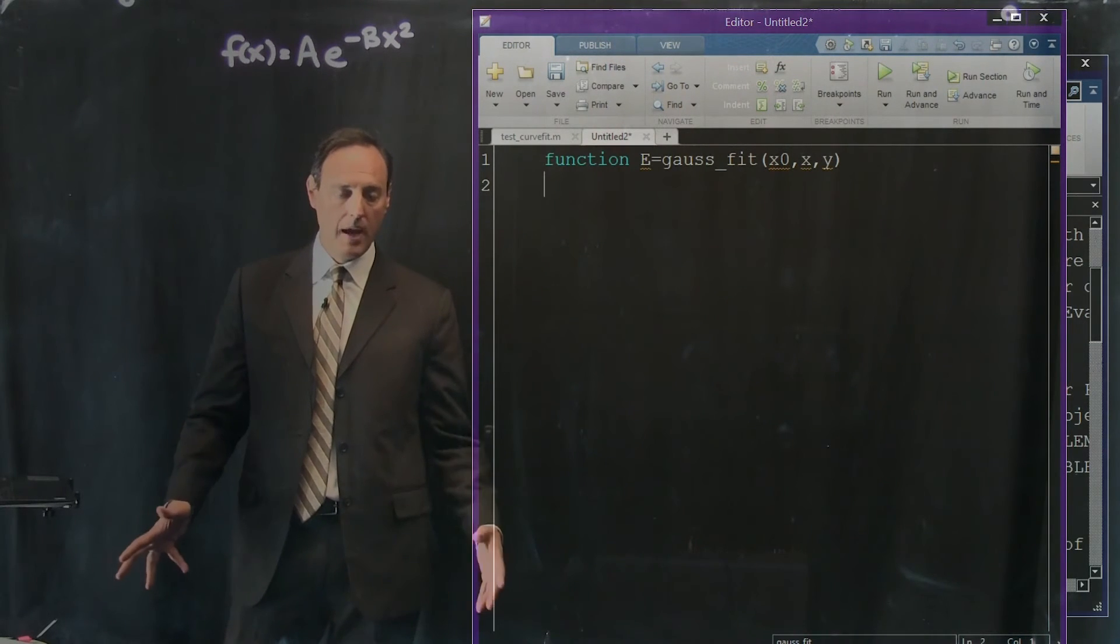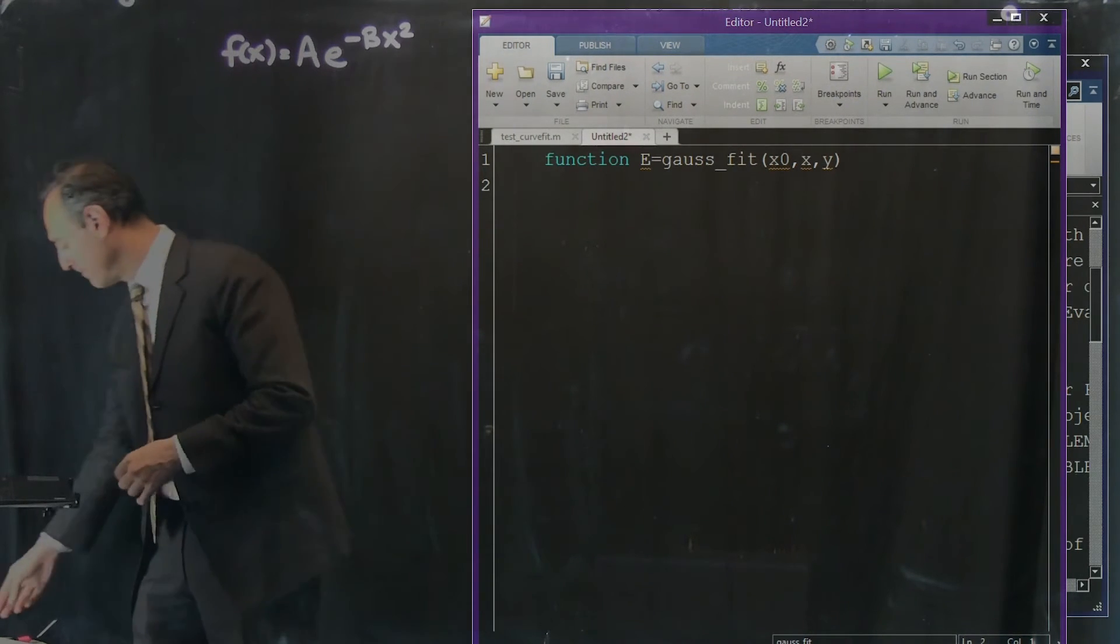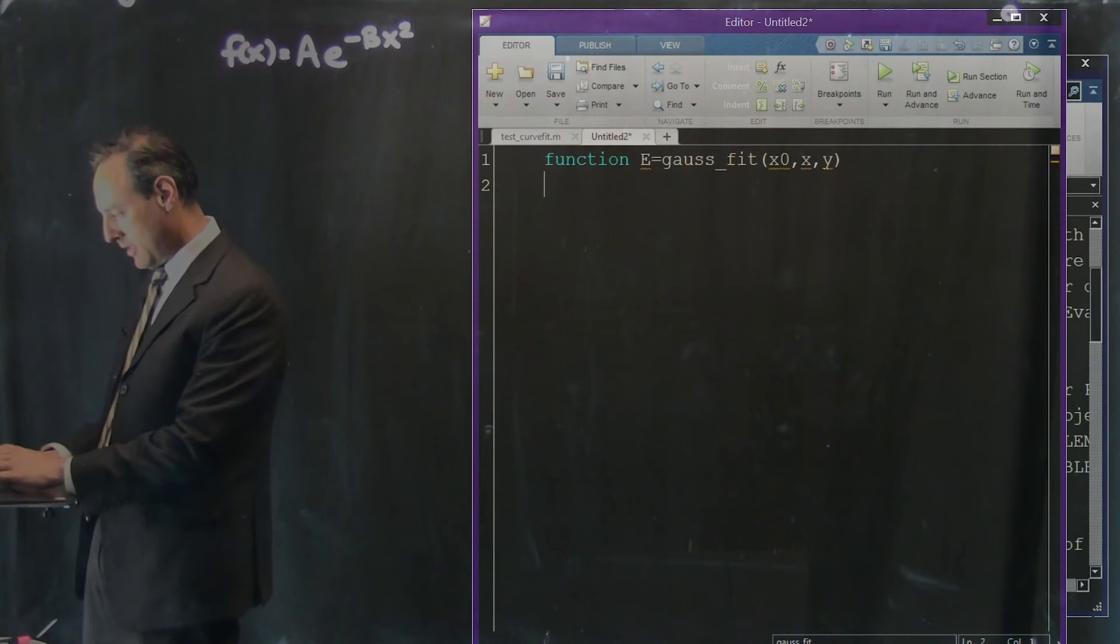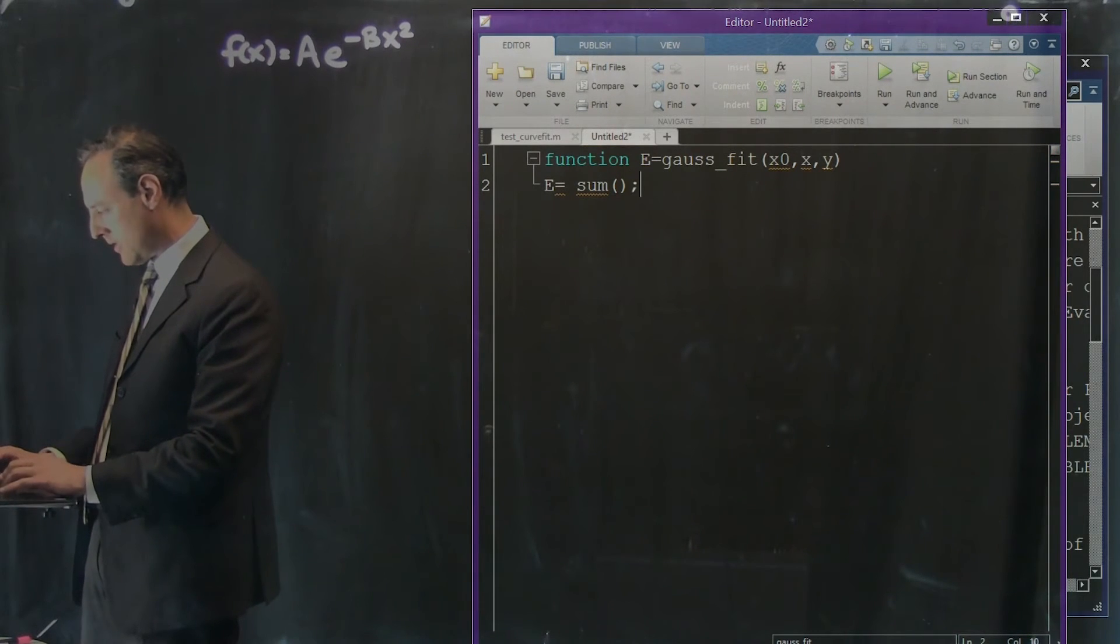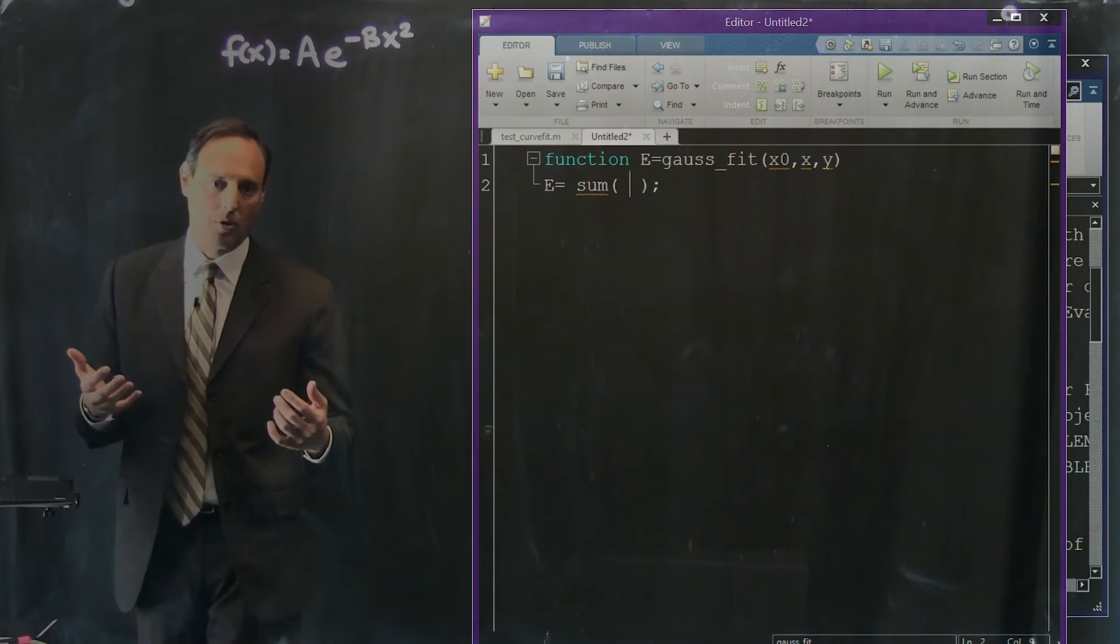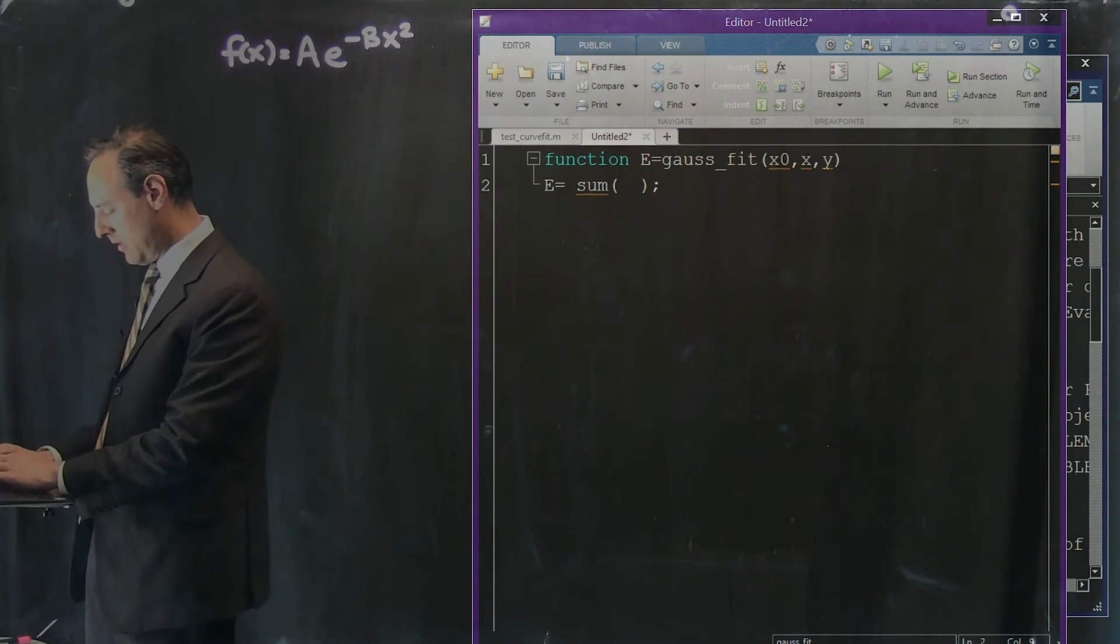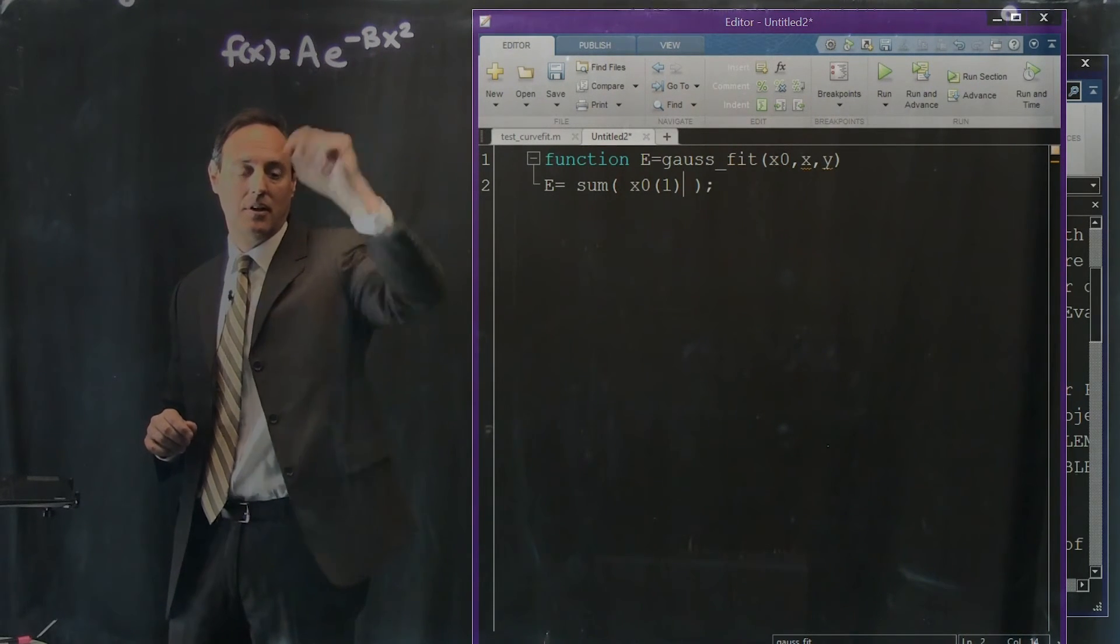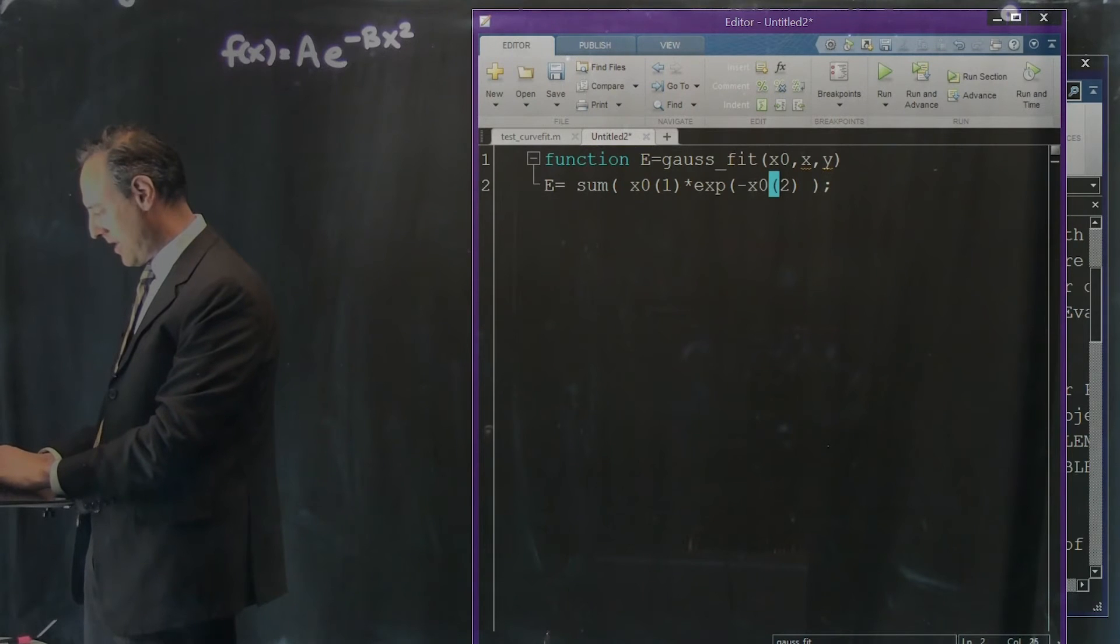That's the basic setup and all we have to do here is evaluate the error. Okay, the least square fit error. Alright, so how are we going to evaluate that? Well, let's write down the formula for it. The error is pretty simple. If you remember it was the sum of the square of the differences of all those, of my function form minus the actual data values.